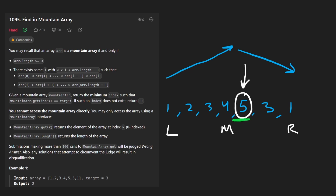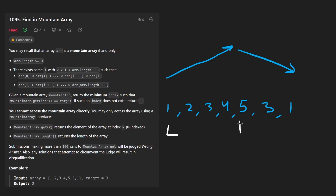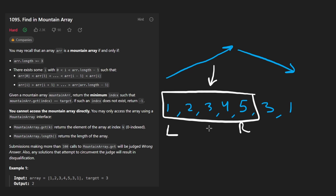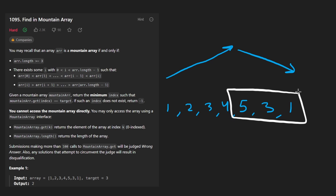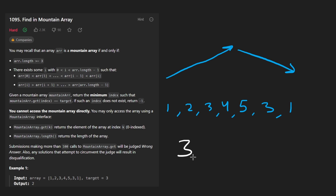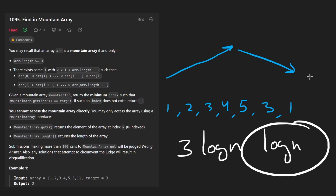Once we find the peak element, we run binary search on the left side with the right pointer set to mid, and if we find the solution we return the index. If not, we run binary search on the right side with the left pointer at the peak and right pointer at the end. Even though we're running three binary searches, three times log n is still O(log n), so the time complexity is definitely better than O(n). Let's code this up.